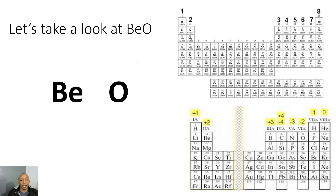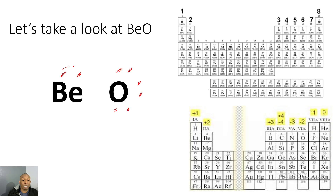Let's take a look at beryllium oxide. Locating beryllium on the periodic table, it has two valence electrons. Oxygen has six valence electrons. Since oxygen needs two more valence electrons to be stable, beryllium gives its two valence electrons to oxygen.